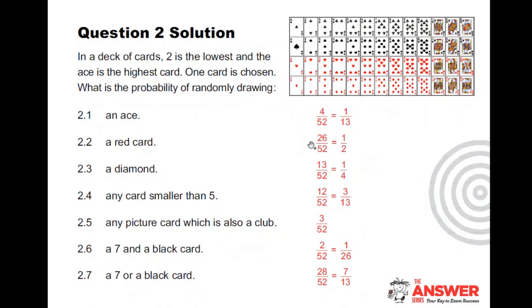A red card, there are 26 out of 52. A diamond, 13 out of 52. Any card smaller than five, that's where I need to know I don't want the ace, so it's two, three, four, and there are four different suits, that's how I get the 12th. Any picture card which is also a club, so it's jack, queen, king of clubs.